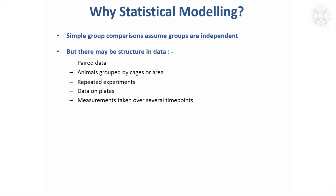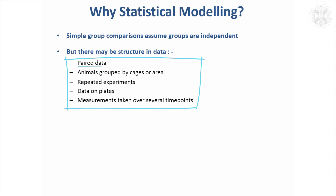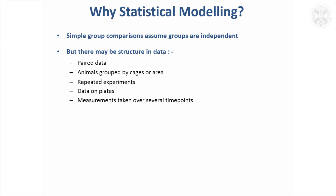So why do we need statistical modelling? The comparisons we did last time were simple group comparisons, and they assumed that your groups of data were independent of each other. But quite often you might be in a situation where you've got more structure in the data. For example, the data might be paired in some way — we did look briefly at that with a paired t-test. Animals might be grouped in cages or by farms in different areas, your experiments might be repeated, you might have data grouped on plates, or measurements taken over several time points. In all these cases there's some structure in the data which ideally it would be good to take into account, and statistical models can do that.